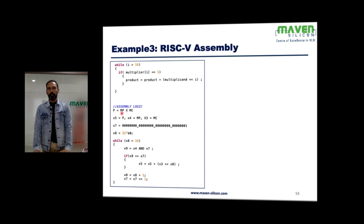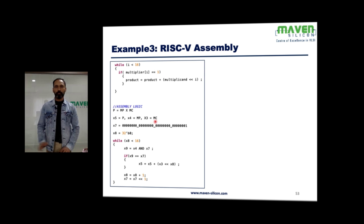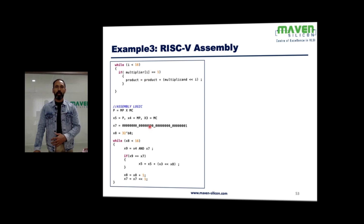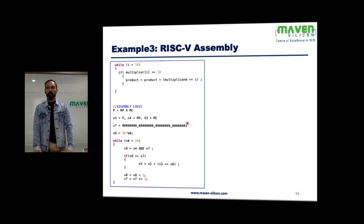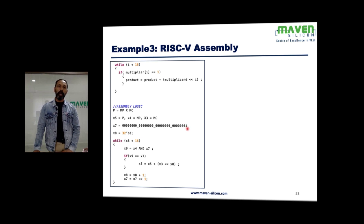The goal is product = multiplier × multiplicand. We allocate registers: x5 is the destination register for product, x4 for multiplier, and x3 for multiplicand. Since you can't do bit slicing in assembly, we need equivalent logic. We use register x7, where all 32 bits are zero except the LSB, which is 1. We will shift this 1 every time to check each bit position.